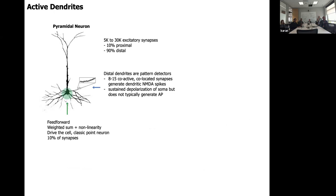From a biological standpoint, this neuron has a complex dendritic tree. Very close to the cell body, the synapses are essentially doing the point neuron thing — a linear summation of inputs — and if you get enough inputs, the cell will fire. There are actually no excitatory synapses on the soma itself, but those in the proximal area are close enough that they act as if there's no impedance mismatch with the cell body. This accounts for only about 2–3% of all synapses.